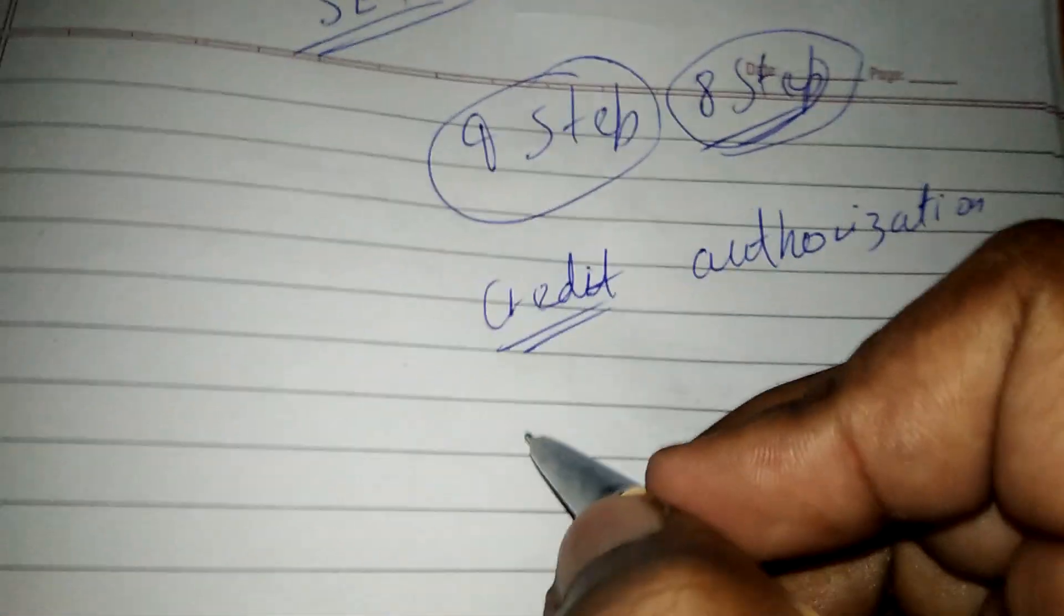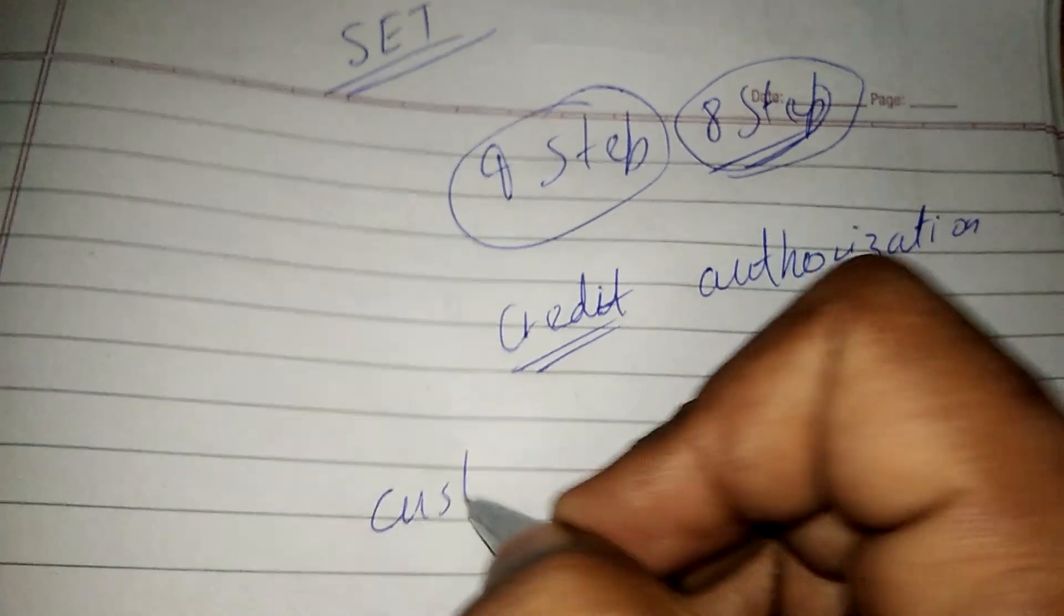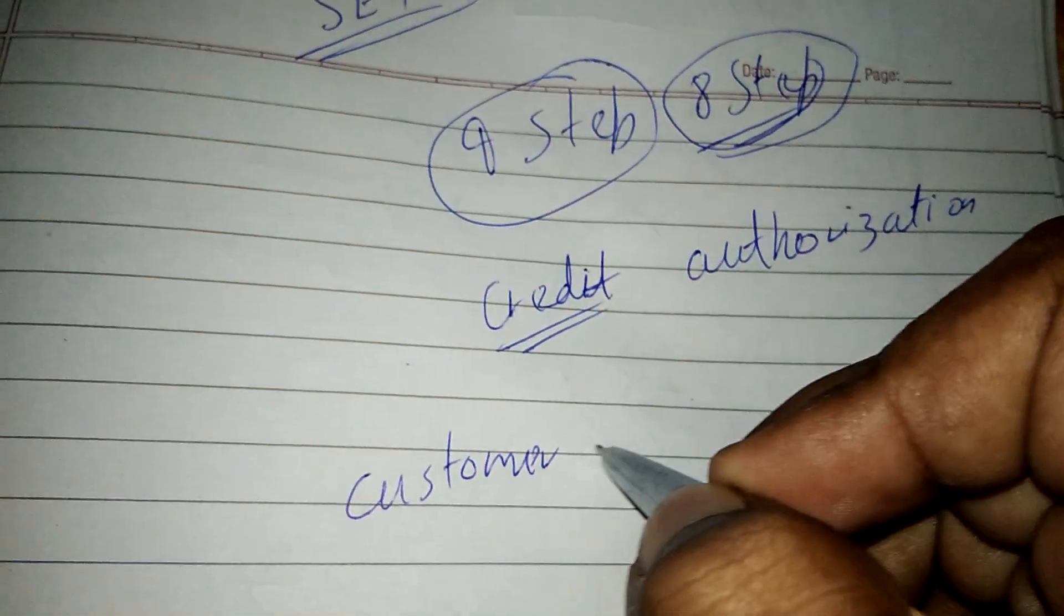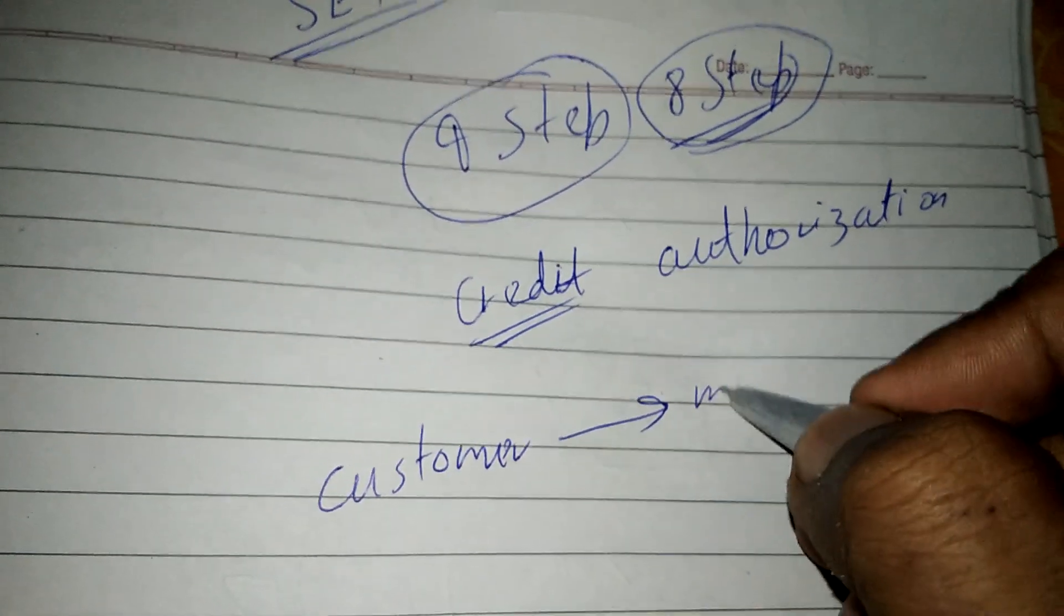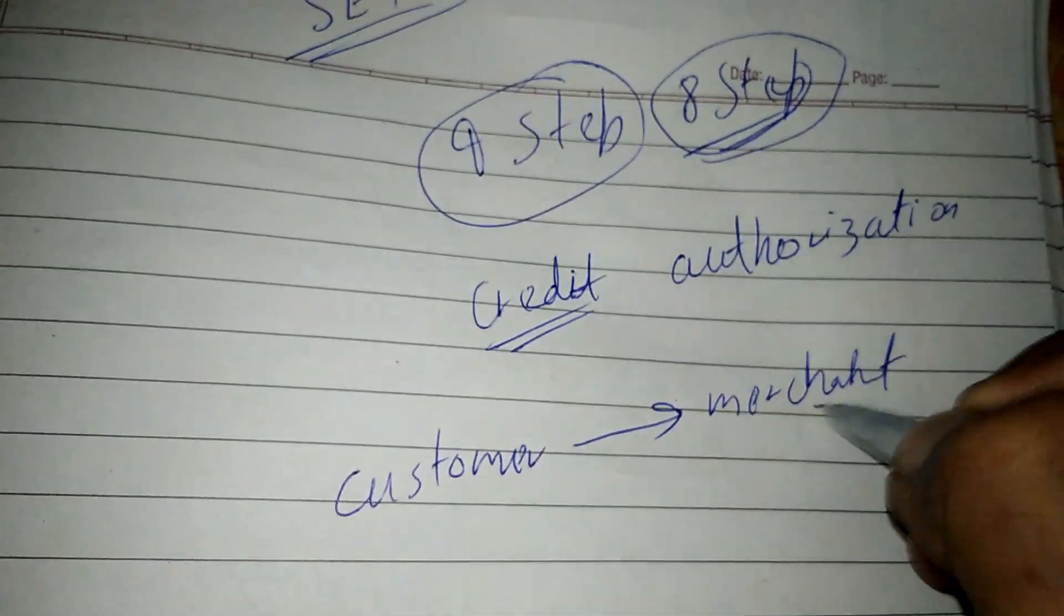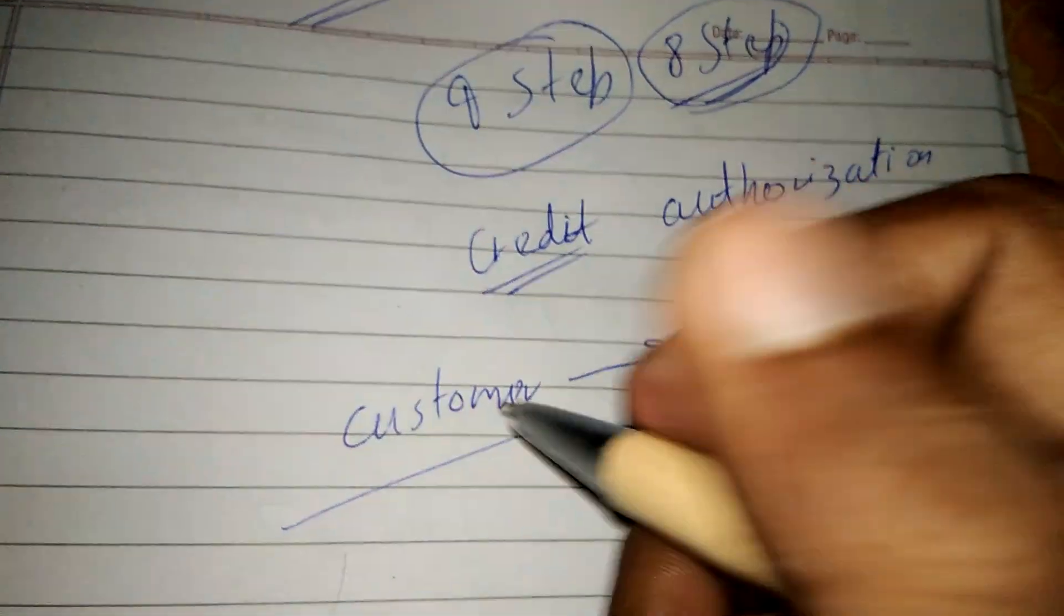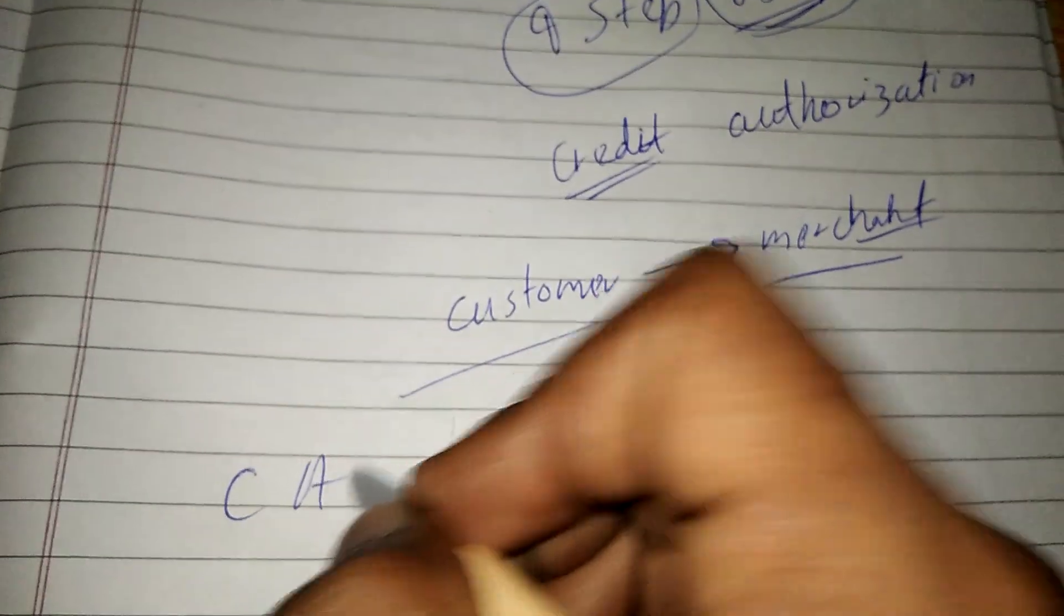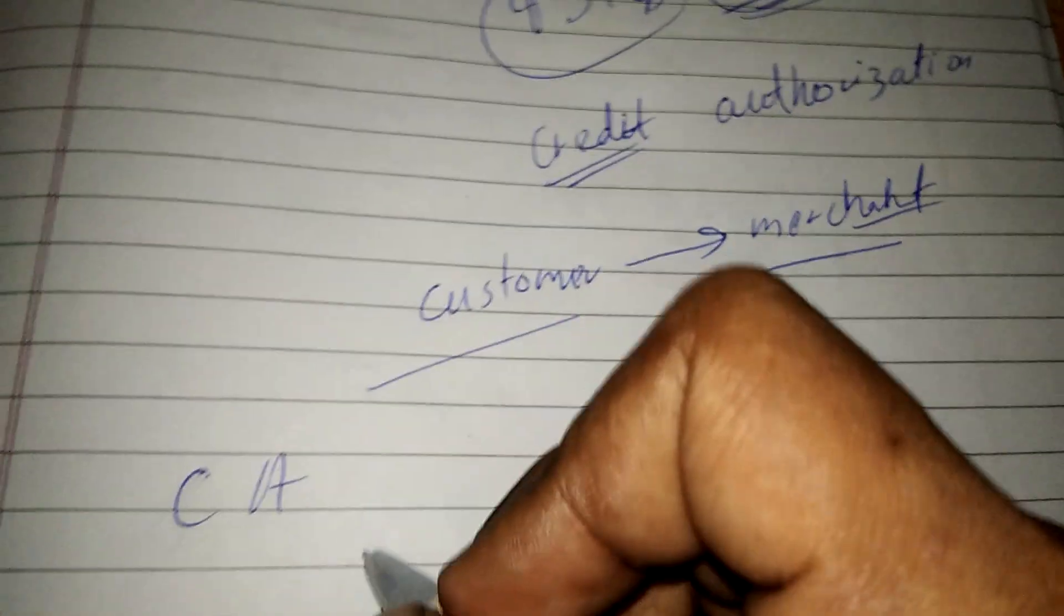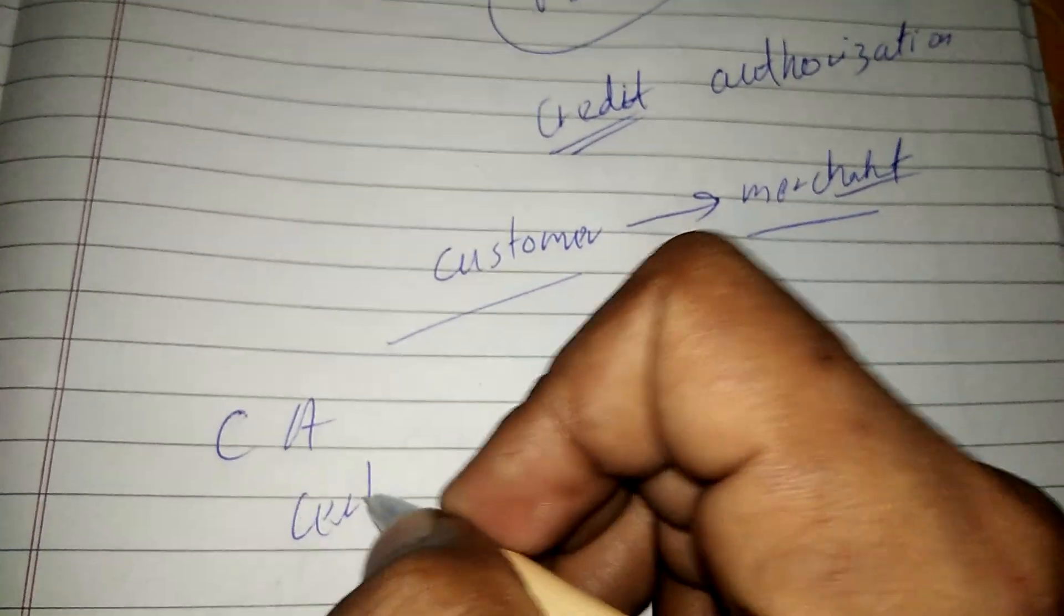So what it does is, you have a customer who wants services to be done from a merchant. First of all, these two have to contact with the CA, or Certification Authority.